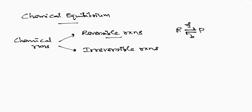Then, what are irreversible reactions? If a reaction occurs only in one direction — that is, the reactants give only products and the products never give back the reactants under the same set of conditions — this type of reaction is what we call an irreversible reaction.